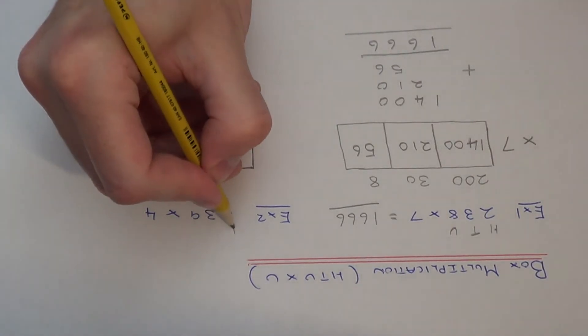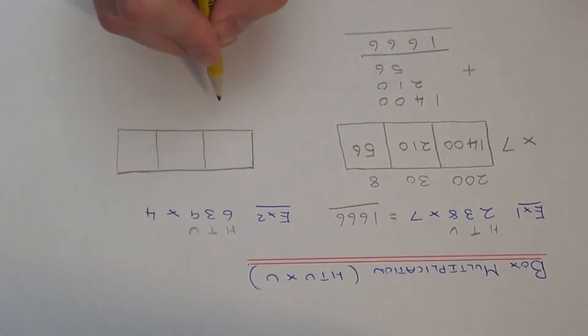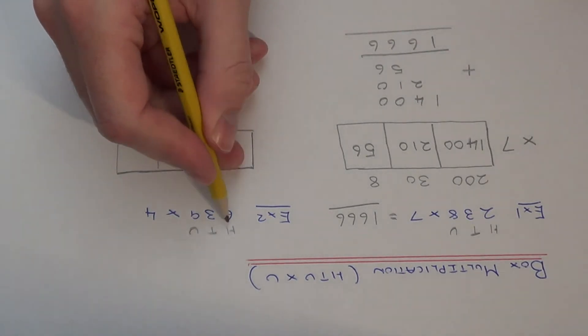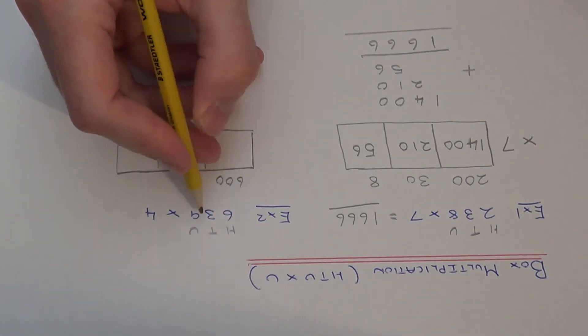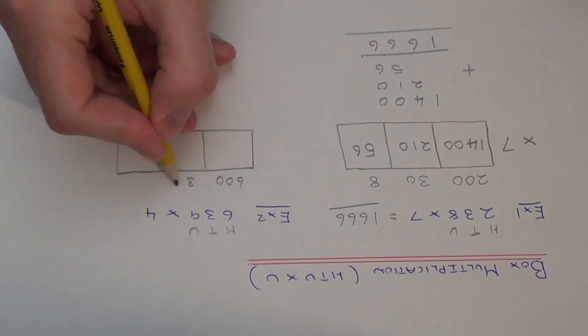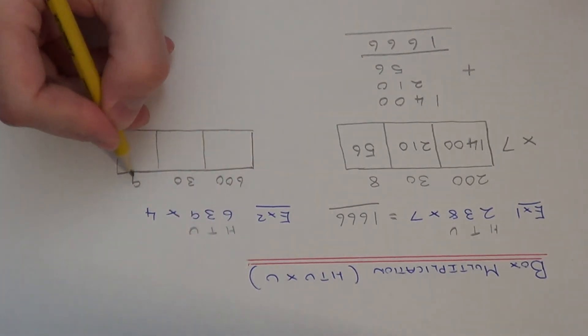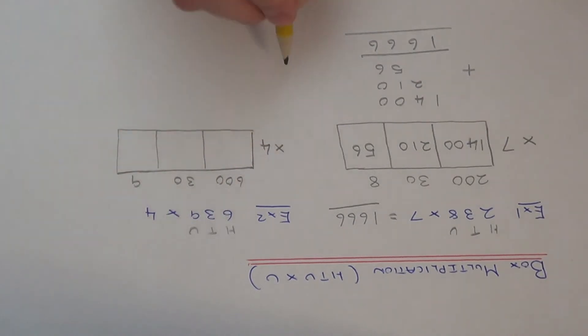If we break 639 up into hundreds, tens and units, so we have 600, three tens and 9 units, and we're multiplying by 4 this time.